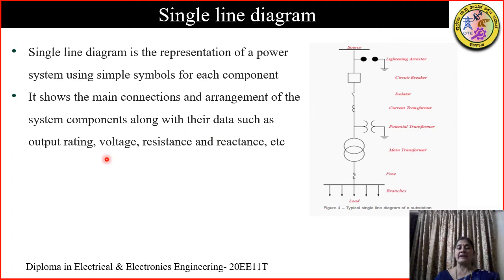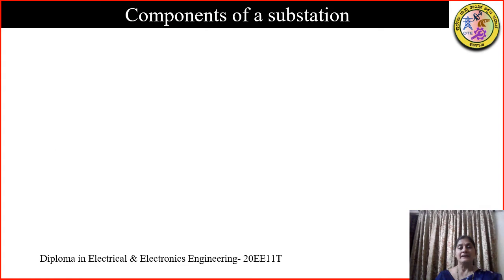The single line diagram shows the main connections and arrangements of system components along with data such as the rating, the voltage, resistance, reactance, etc. Here we have many components which have been graphically represented. In this session, we are going to study all the components and their graphical symbols so that we can draw a single line diagram.